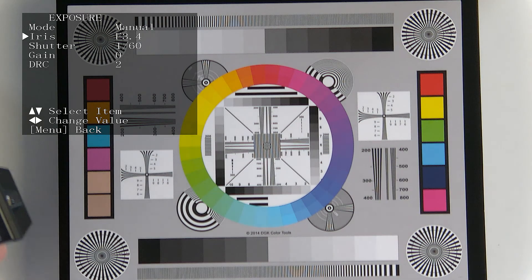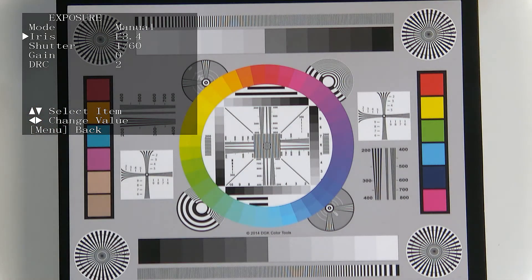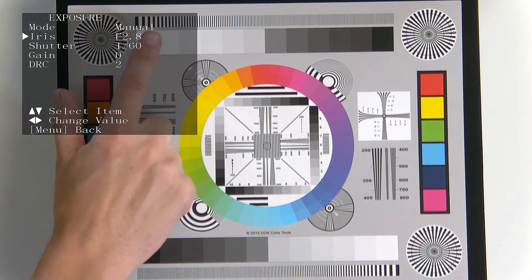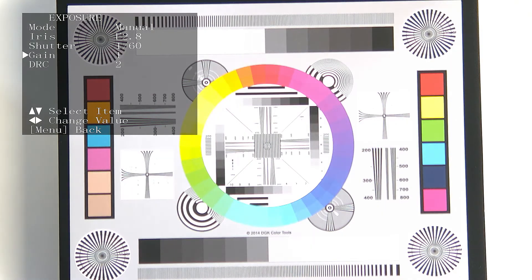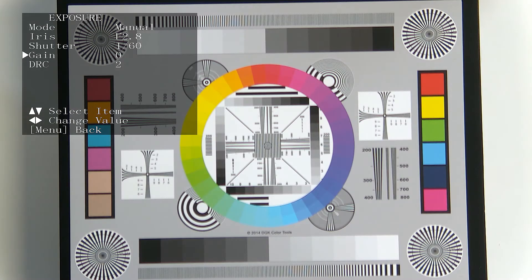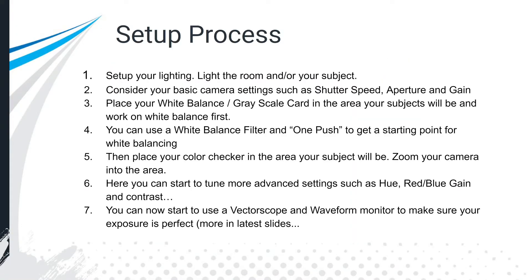Once the shutter speed is locked, all we really need to do is adjust the iris until we get what we like. Around f/2.8 to f/4.0, depending on taste — I want that white to be really white and the black to be really black, so I'm okay with around f/2.8. I don't need to add extra gain because there's plenty of light in this space. You only use gain if you absolutely need to in a low-light situation. So: set up your lighting, set your shutter speed, then tune aperture and gain to match, and then look at white balance.